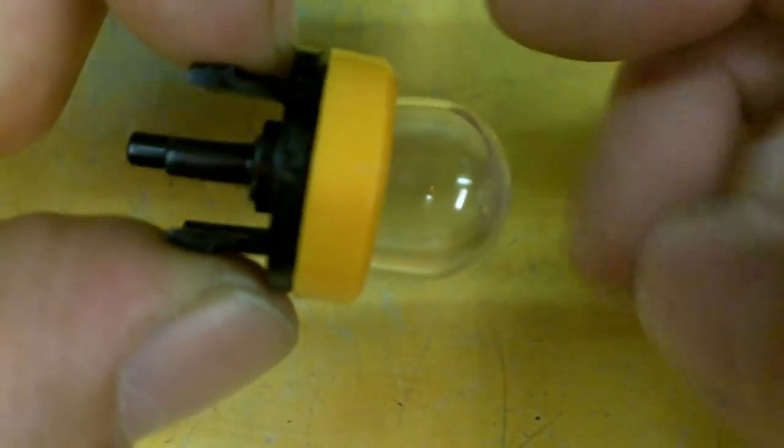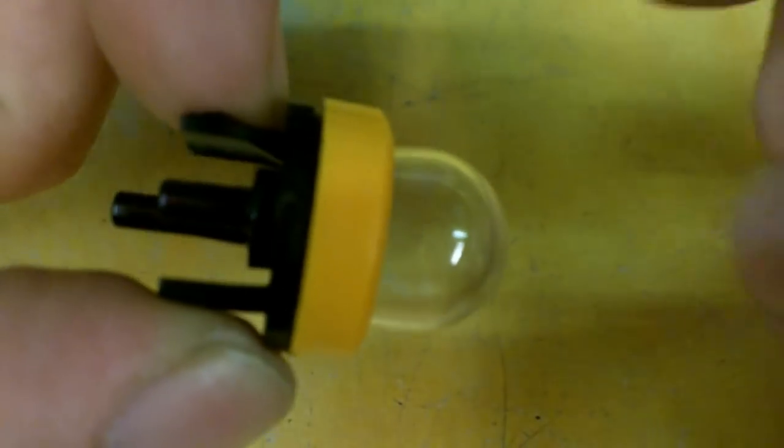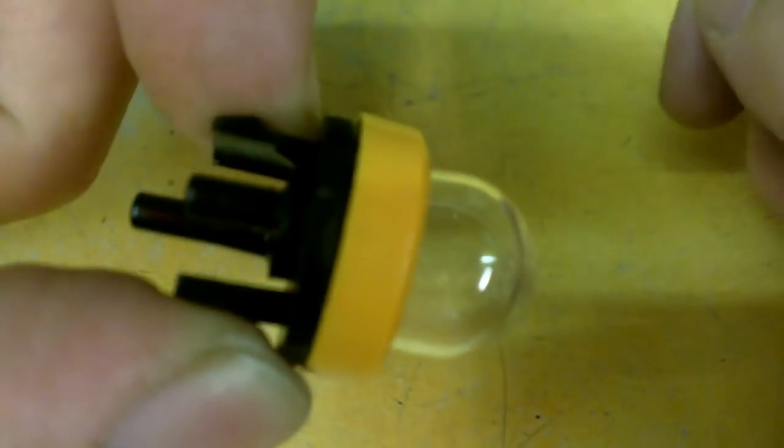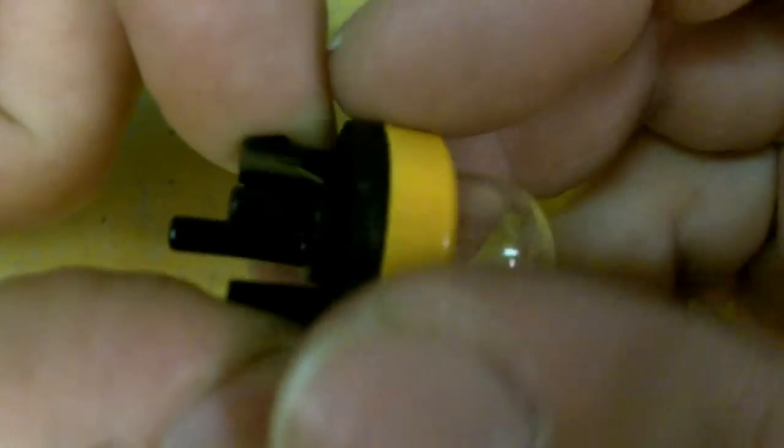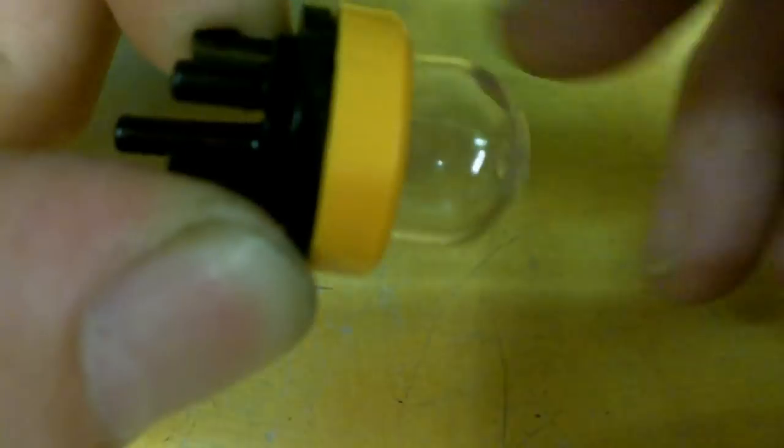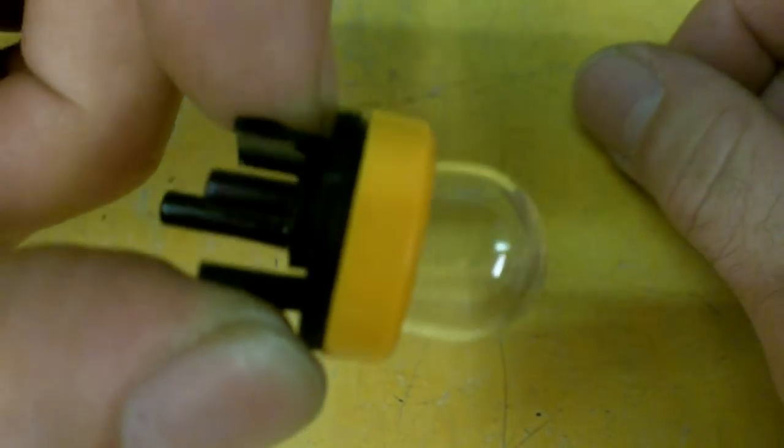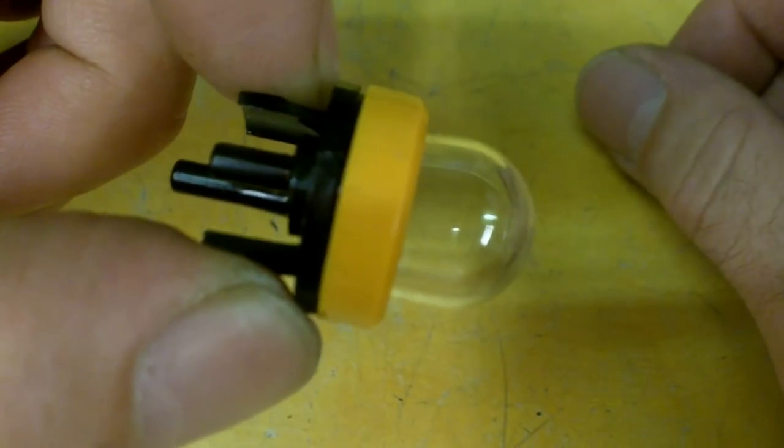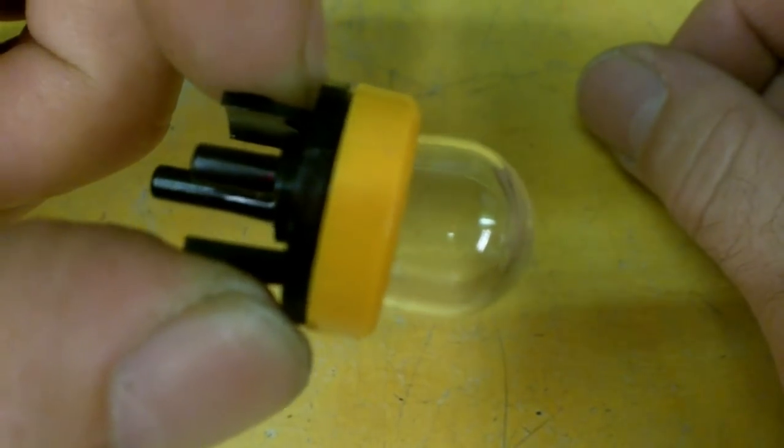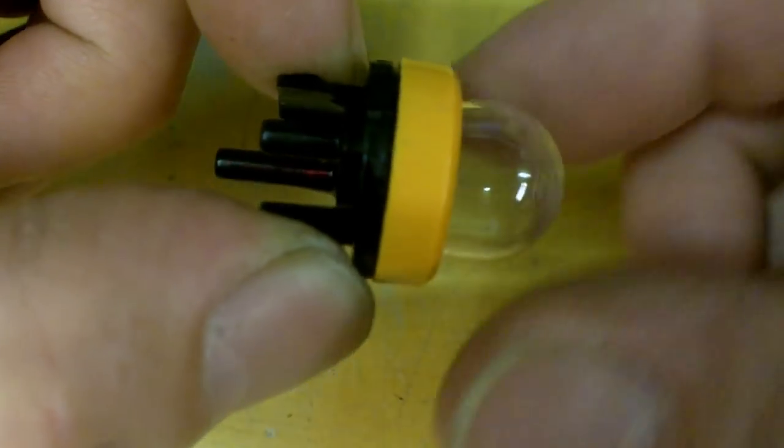It would be nice if they would make these serviceable, meaning between the black and the yellow here, thread this area, screw it off, put in a new bulb, screw it back on, and there you go. Unfortunately, these are more like printers these days—the printer is in essence free, but the ink is where they get you.